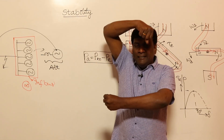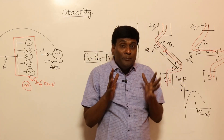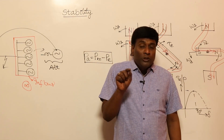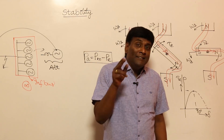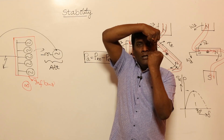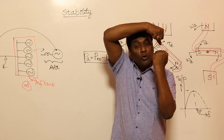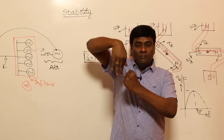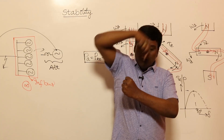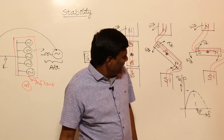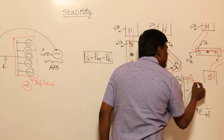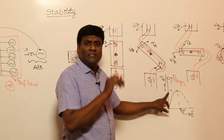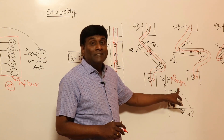Under steady state conditions: when delta equal to 0, output power is zero but synchronizing power coefficient should be maximum. When delta equal to 90, output power is maximum but synchronizing power coefficient is zero. So they follow opposite trends — sine and cosine relationship. Forget about equations — they will come automatically.